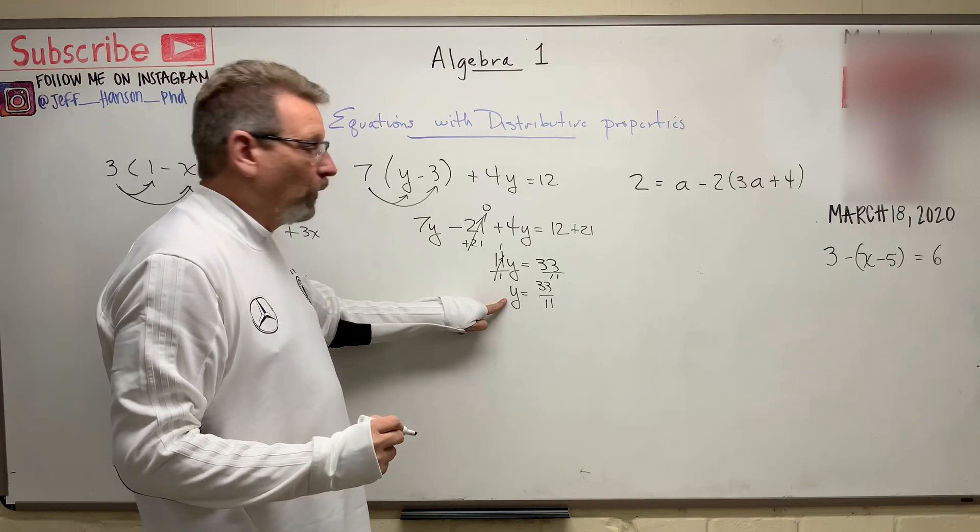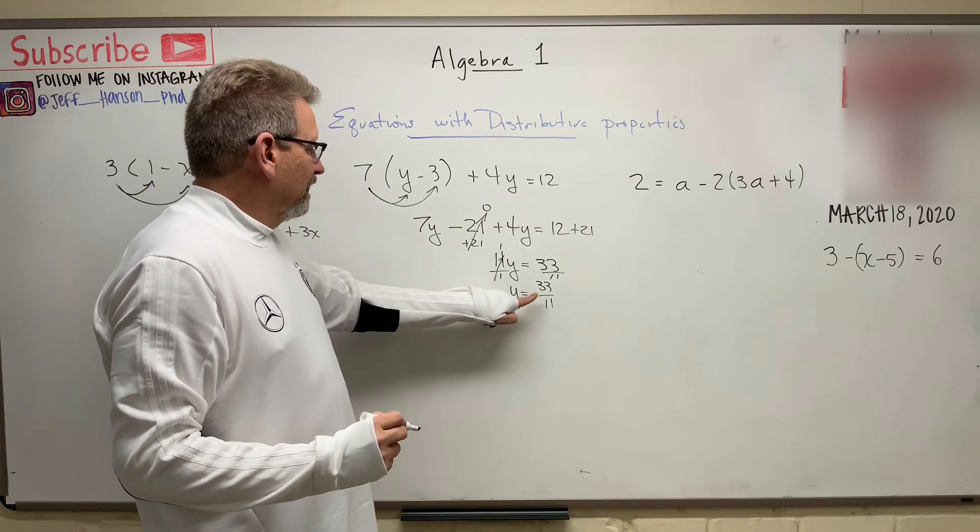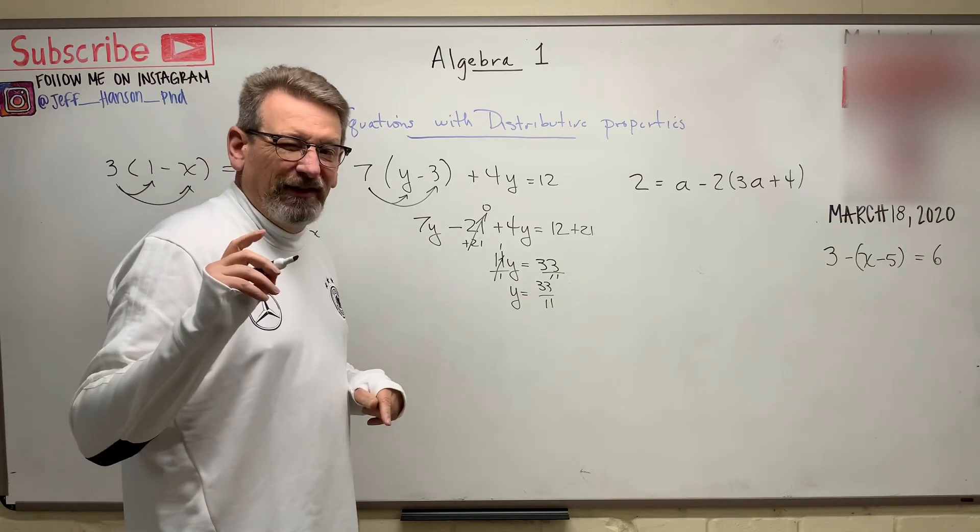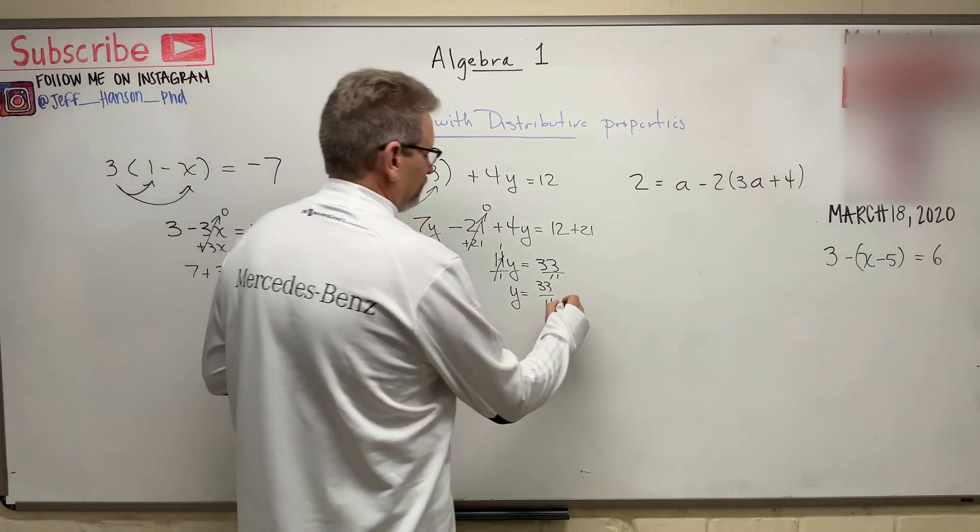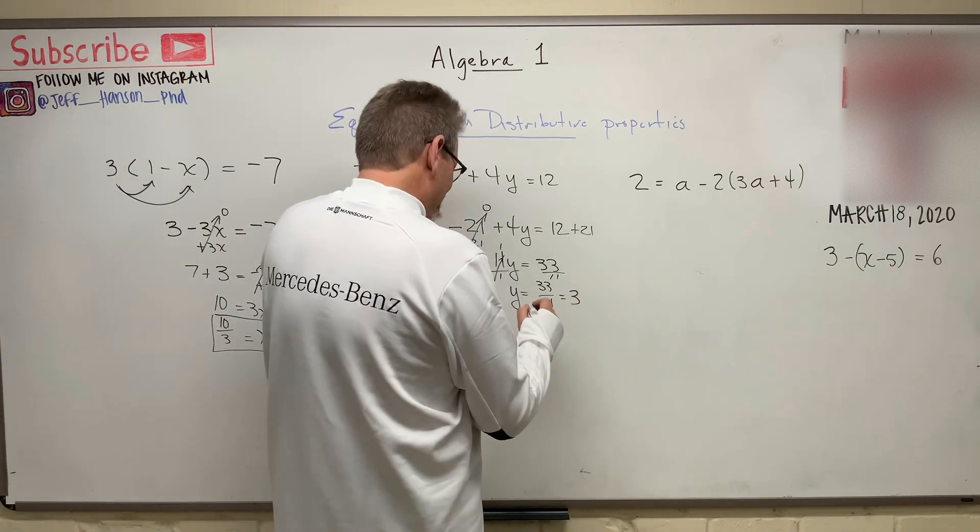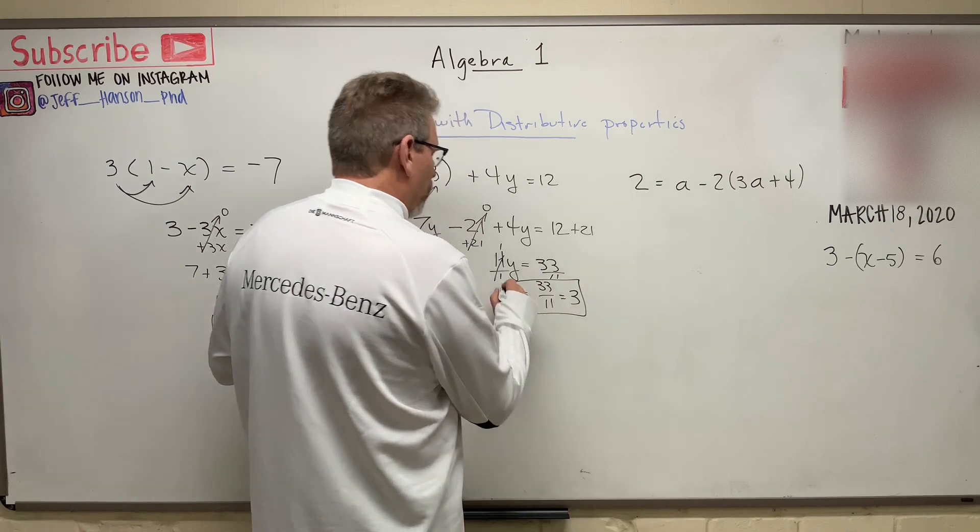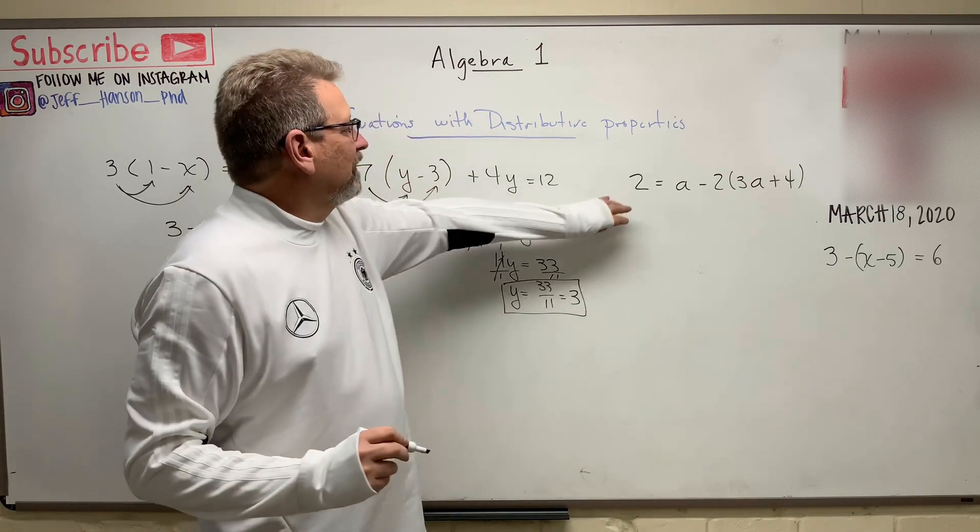There's an invisible one in front of that y. 33 divided by 11, how many times does 11 go into 33? Three times. So y equals 3. There's that one. Let's try it again.